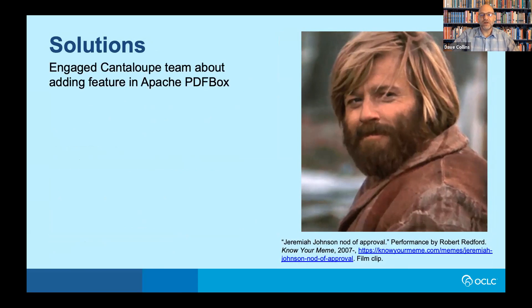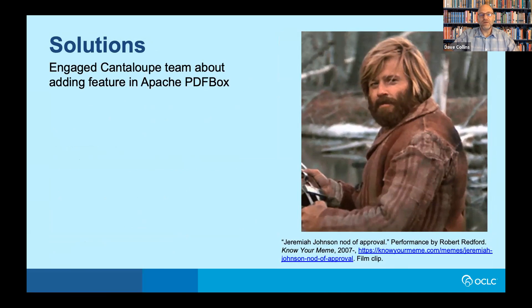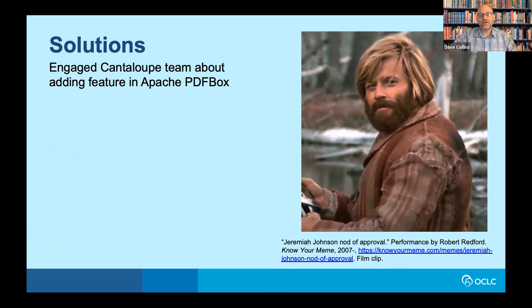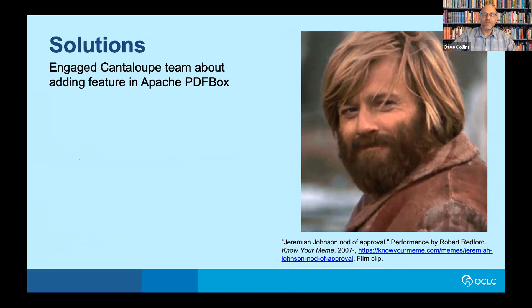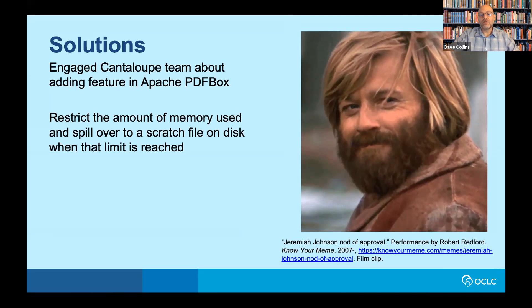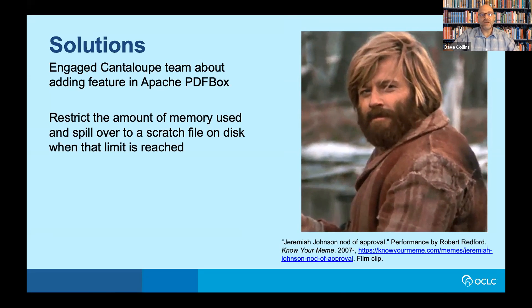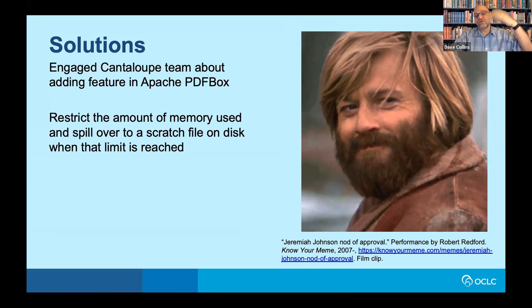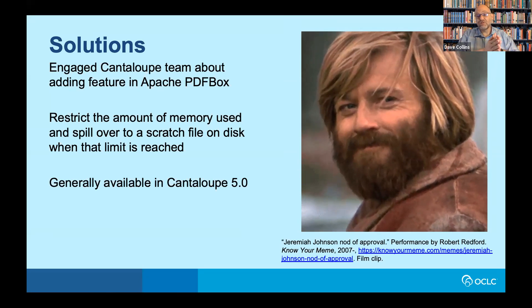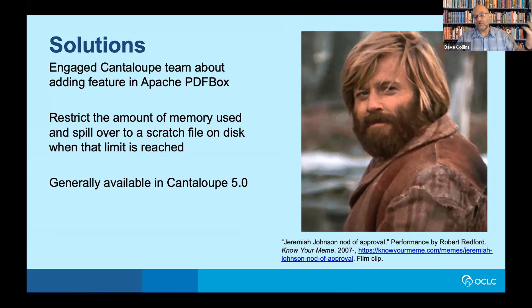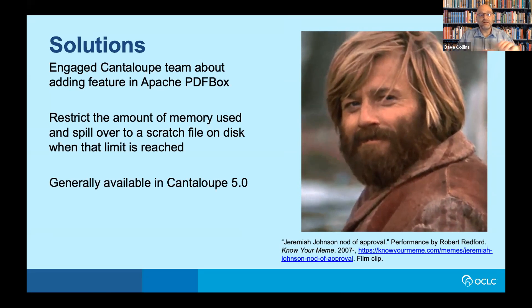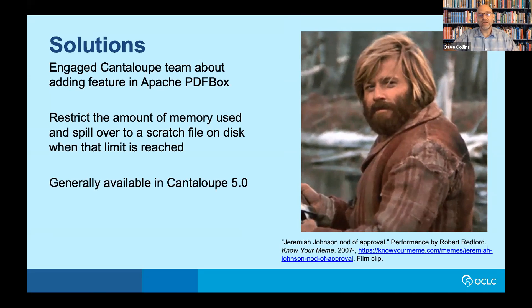We approached the Cantaloupe team and worked with them on implementing an Apache PDF Box feature that allows you to allocate file storage instead of memory for the rendering portion. OCLC uses this to restrict the amount of memory each PDF uses and roll the rest over into a scratch file — you're then only limited by the amount of file space available when rendering these PDFs. Granted, it's slower, but it was a great solution. This feature is now generally available in Cantaloupe 5.0.